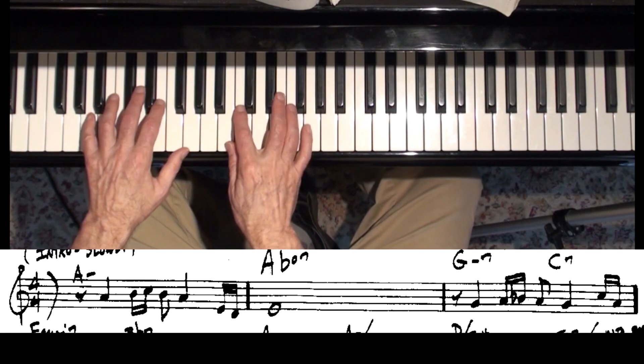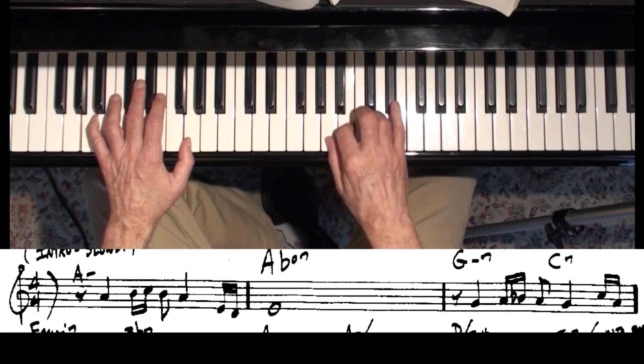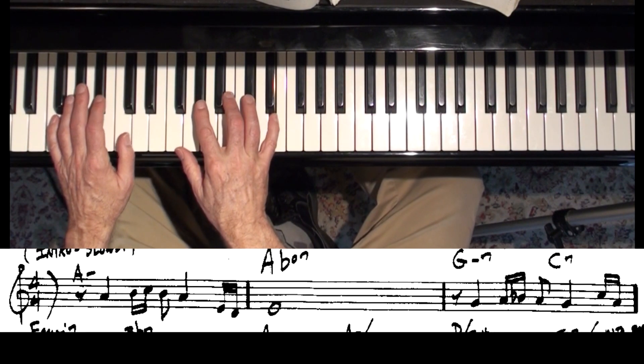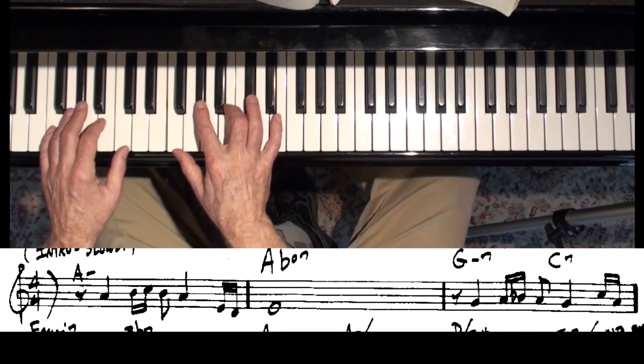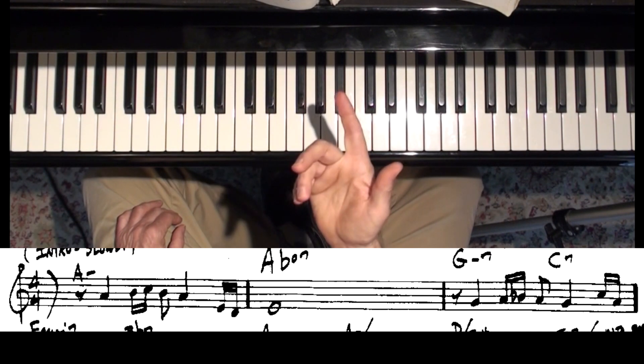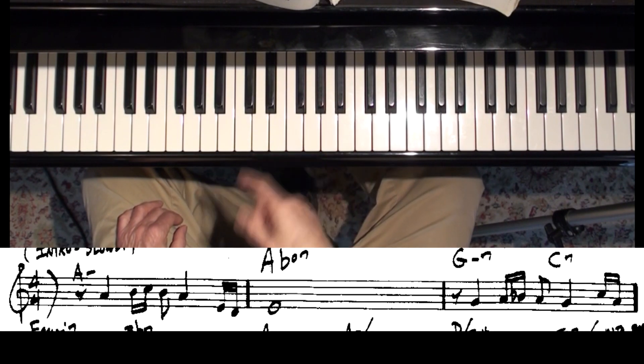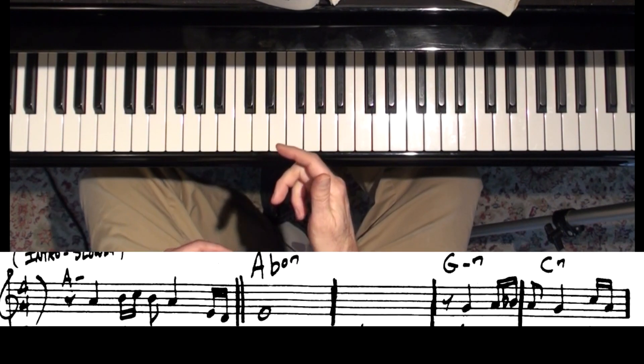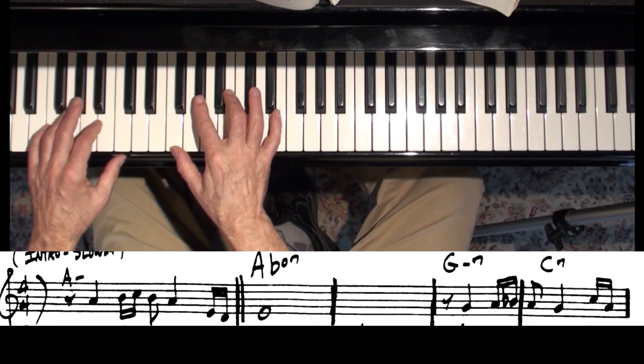And right there on the second bar is where the rhythm starts. However, it says one measure of A flat diminished seventh, and all these measures are really two measures. So you should double the length of all these measures. So play A flat diminished seventh for two measures.